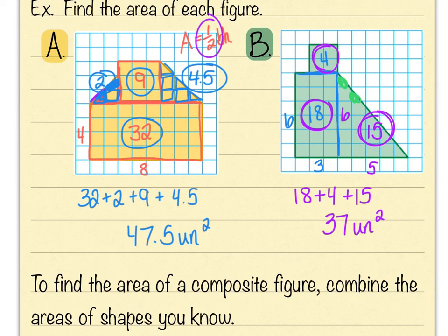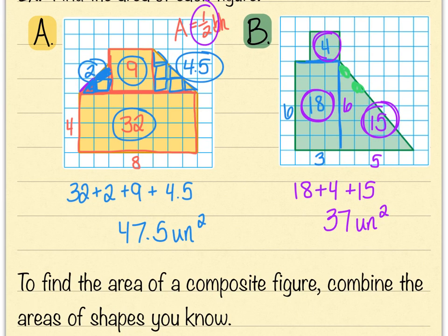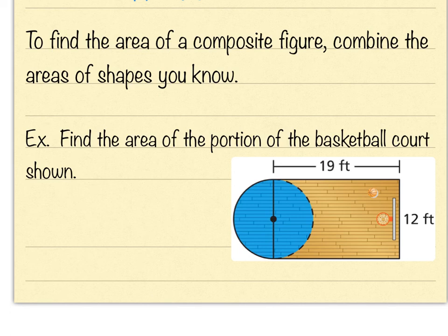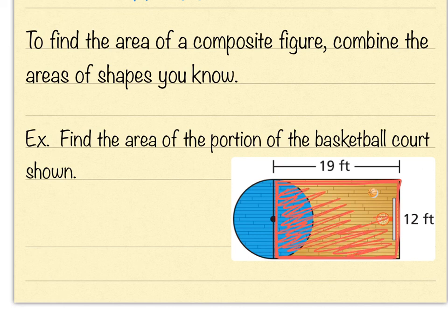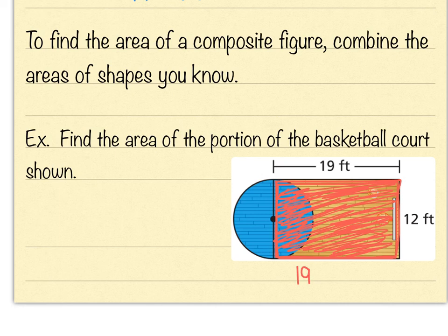To find the area of a composite figure, we combine the areas of shapes we already know — rectangles, squares, triangles — and circles will come into play as well. This composite figure is a portion of a basketball court consisting of a rectangle and a semicircle. For the rectangle, the base is 19 and the height is 12, so 19 times 12 equals 228 square units for the rectangle part.